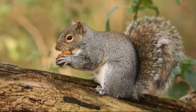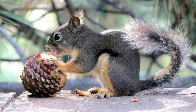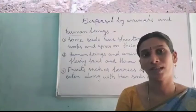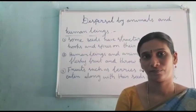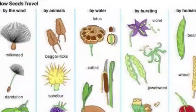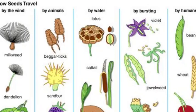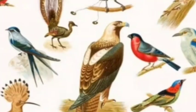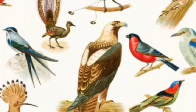Fruits such as berries which are eaten by animals like squirrels are also a method of dispersal. Animals such as squirrels eat the fruits and berries along with the seeds. After digestion, the seeds come out with the help of droppings. Like that, seeds are dispersed to distant places by birds and animals.